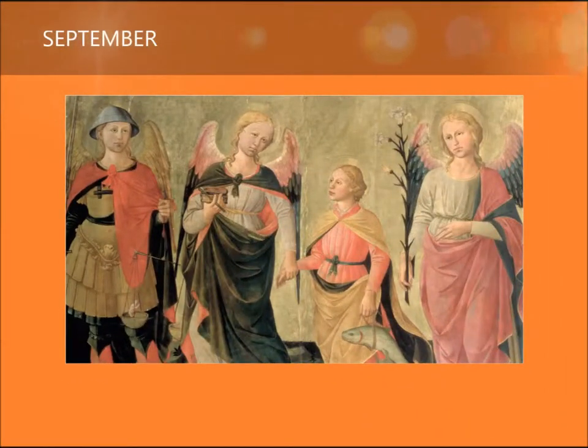September: The Three Archangels and Tobias. Tempera on panel, circa 1460 to 1470, by Domenico di Michelino. The unknown patron of this painting, like his contemporaries, sought comfort in stories from Scripture, the lives of the saints, and most popular of all, images of Christ and his mother the Virgin. 15th century viewers identified the angels and other divine beings by means of their attributes, that is, the symbols associated with them.